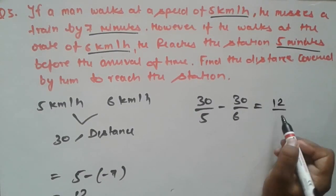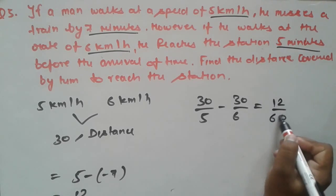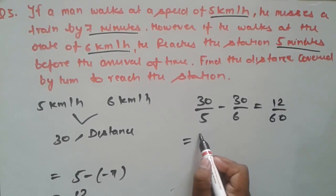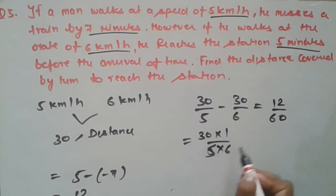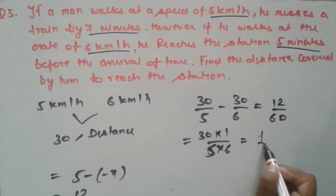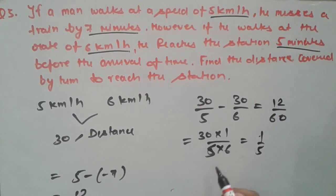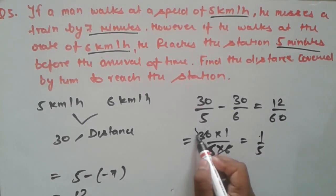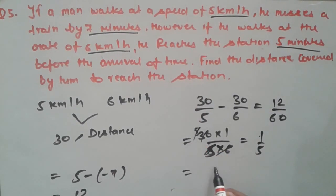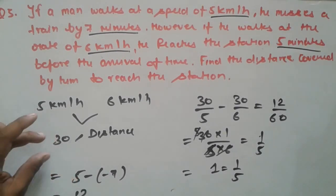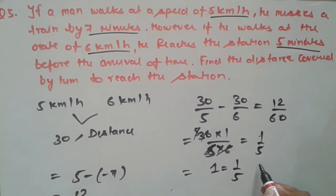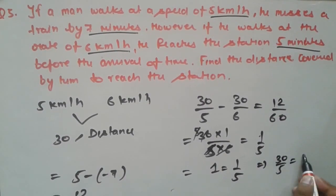Convert 12 minutes to hours: 12/60 = 1/5. So 30 × (1/5 − 1/6) = 12/60. Taking LCM of 5 and 6 is 30: 30 × 1/30 = 1 = 1/5. So the value of 1 unit equals 1/5. We assumed 30 as the total distance, so the value of 30 units is 30/5 = 6. So 6 km is the final answer.